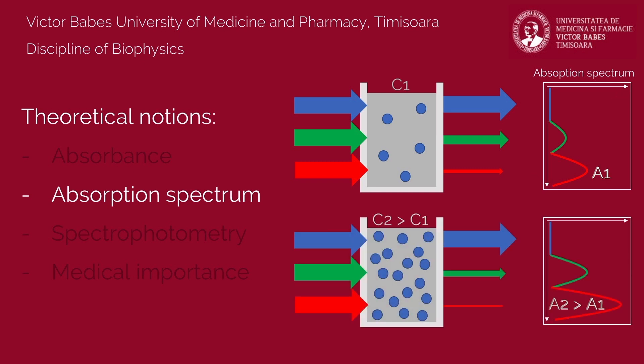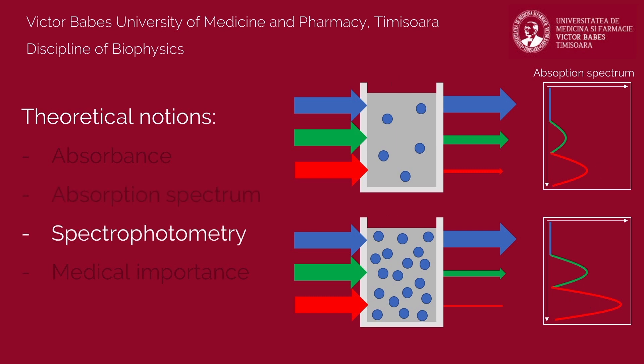The absorption spectrum shape depends on the nature of the solution, while the value of absorption is directly proportional with its concentration. Spectrophotometry is the scientific method for obtaining absorption spectra of substances, aiming to determine their chemical composition.